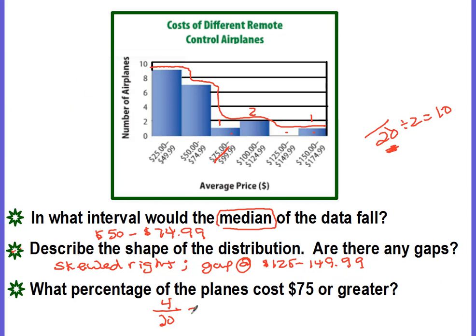Okay, so to turn this into a percent, we need to make this 20 into 100 because percent is always out of 100. Scale factor times five. Four times five is 20. Now that we have a number out of 100, that number is your percent. So 20% of the planes cost $75 or greater.